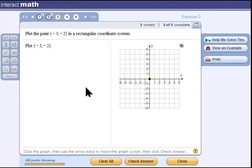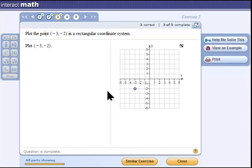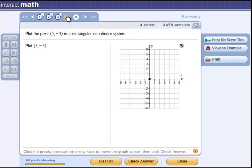So I go to the point right there in the middle - we call that the origin. I right-click on it, I move to the left 3: 1, 2, 3, and I move 2 down: 1, 2. And I release. I go to check answer. There it is, fantastic.